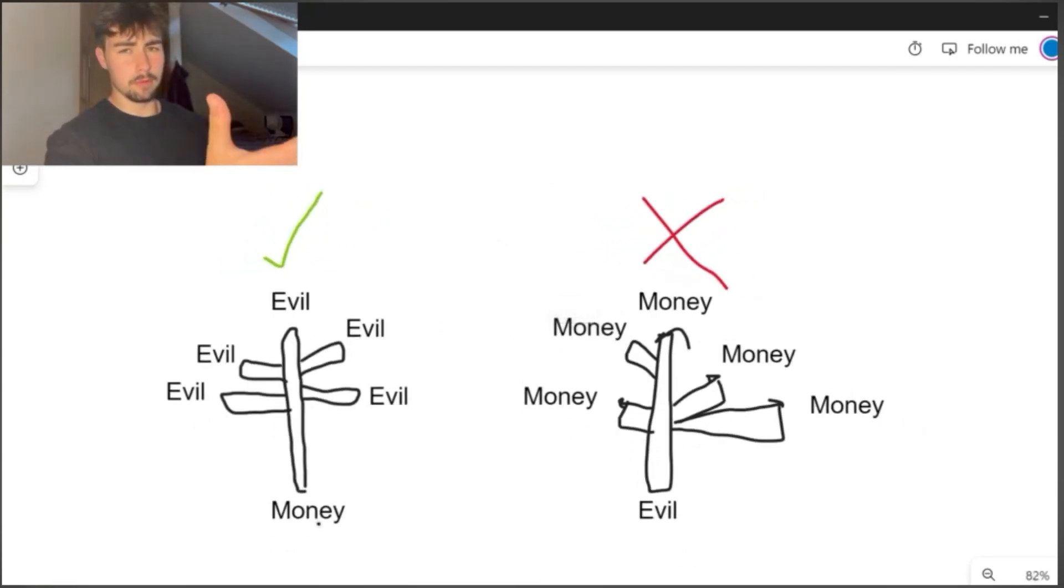Money may be the root of all evil. Okay, that's fair enough. So we've got money here and that is at the root of all these different types of evils. So money may be the root of all evil.